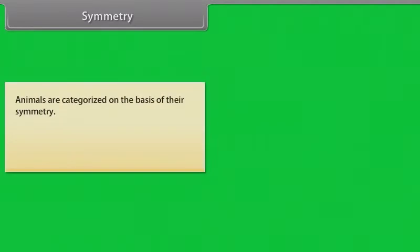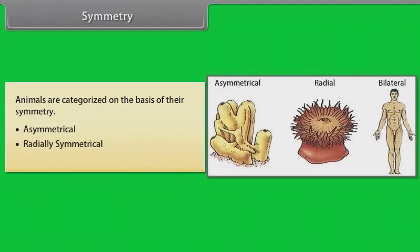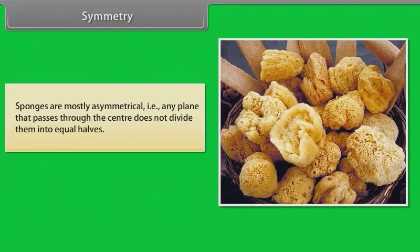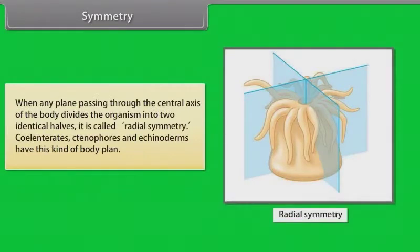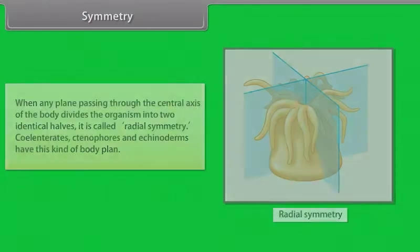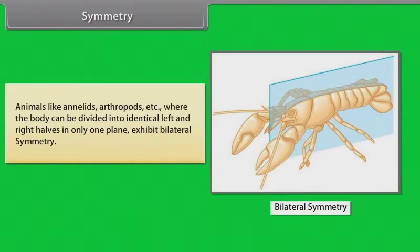Animals are categorized on the basis of their symmetry. They are asymmetrical, radially symmetrical, and bilaterally symmetrical. Sponges are mostly asymmetrical — any plane passing through the center does not divide them into equal halves. When any plane passing through the central axis divides the organism into two identical halves, it is called radial symmetry. Coelenterates, ctenophores and echinoderms have this kind of body plan. Animals like annelids and arthropods, where the body can be divided into identical left and right halves in only one plane, exhibit bilateral symmetry.